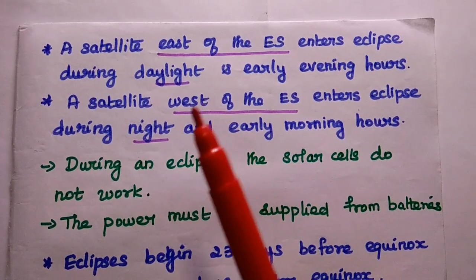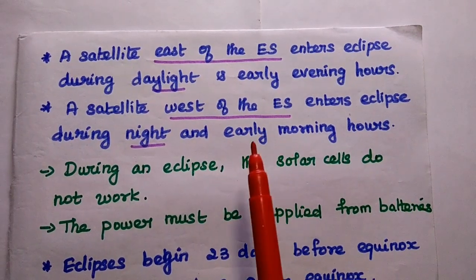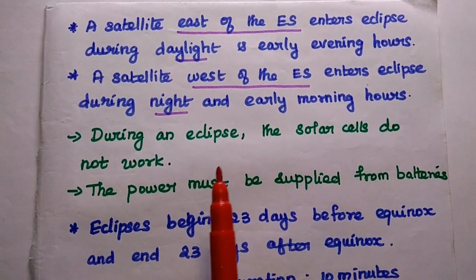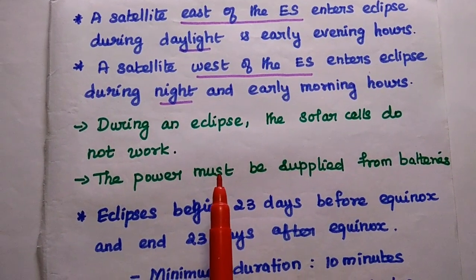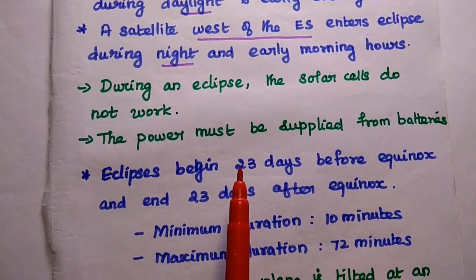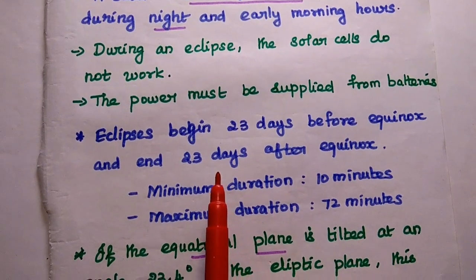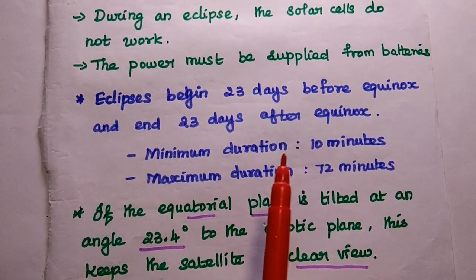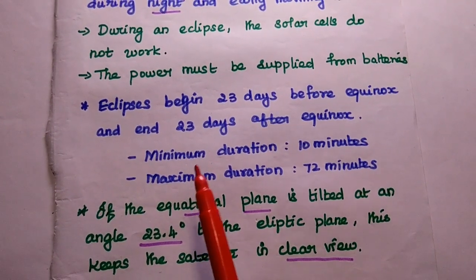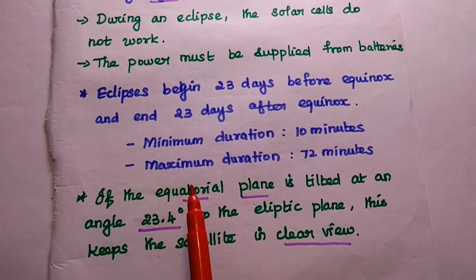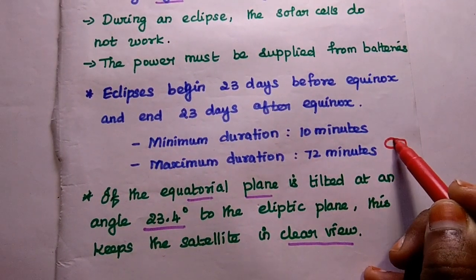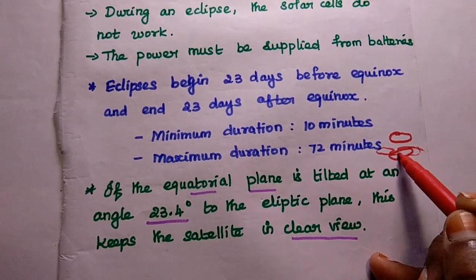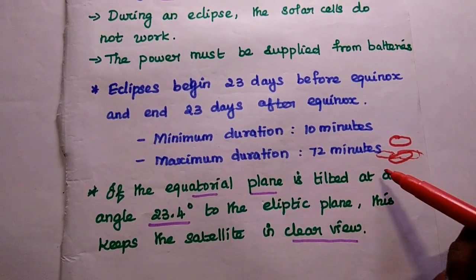To summarize: a satellite east of the earth station enters the eclipse during busy hours, while a satellite west of the earth station enters the eclipse during non-busy hours — night and early morning hours. During an eclipse, the solar cells do not work and power must be supplied from batteries. Eclipses begin 23 days before equinox and end 23 days after, lasting a minimum of 10 minutes and a maximum of 72 minutes. If the equatorial plane is tilted 23.4 degrees with respect to the geostationary orbit, the satellite is available in clear view.